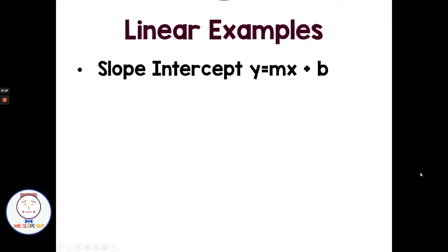So slope-intercept form, y equals mx plus b, definitely going to be linear. We know what the slope is, we know what the y-intercept is, we graph those lines all the time. Standard form, ax plus by equals c, also going to be linear.